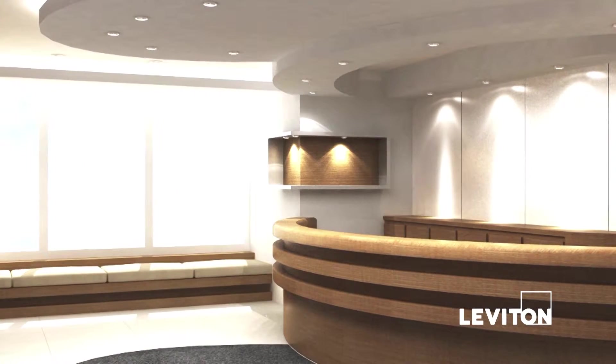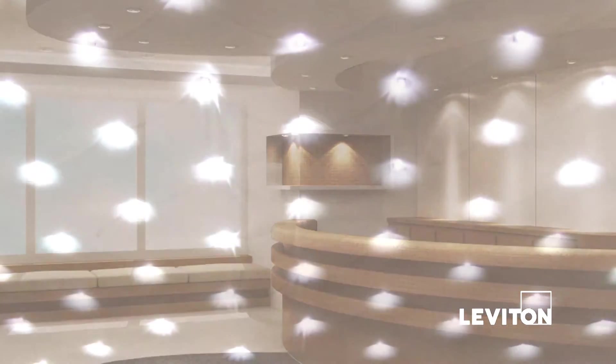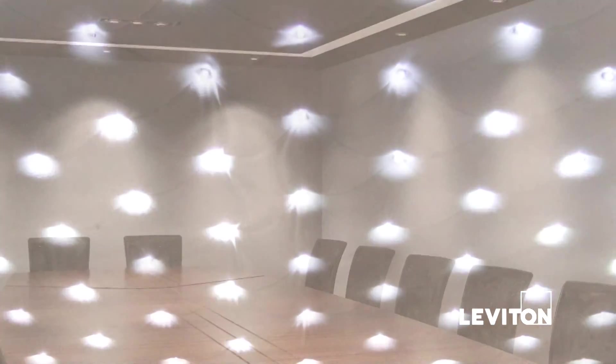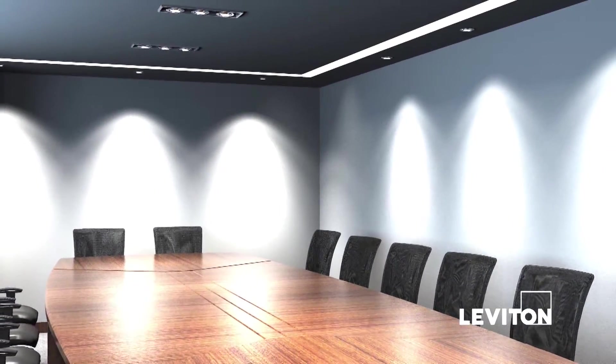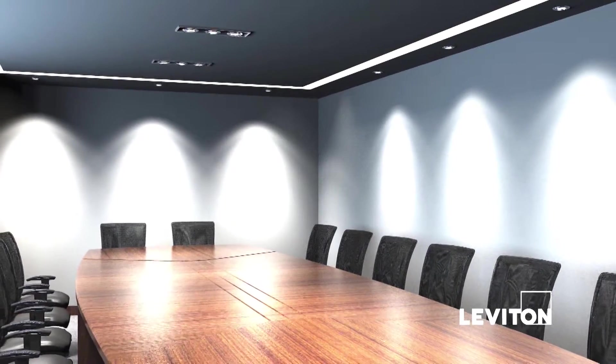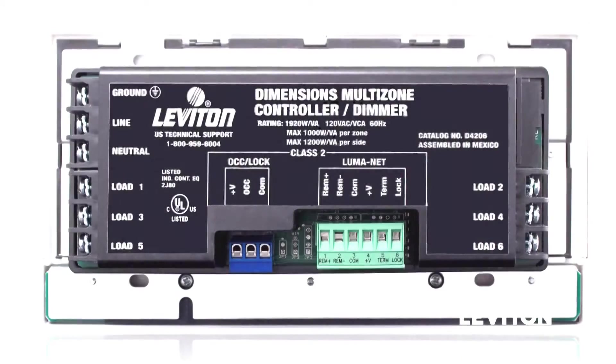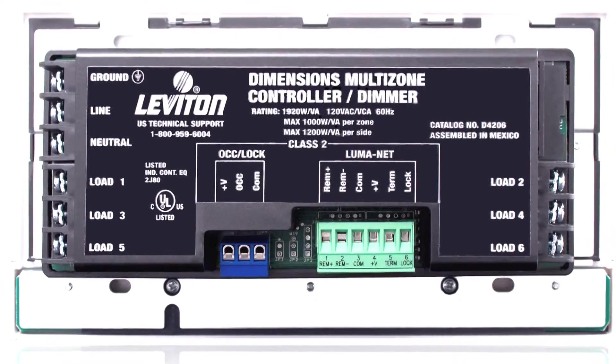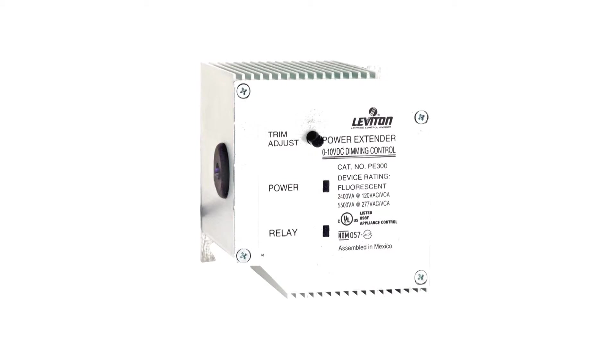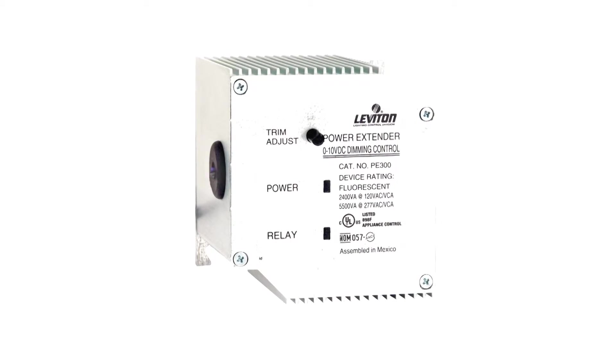One of the things we're seeing quite common in the field is the need to control load types that are 1 to 10 volt or 0 to 10 volt controlled loads. We're seeing this a lot in commercial applications like office spaces where they want to use LED lighting and we all know that you get some of the best dimming control when you're using 1 to 10 volt as a control signal as compared to trying to just do two-wire devices. Remember that the Dimensions 4000 are all two-wire outputs. So quite often what we will do is we'll use a power extender to convert the 0 to 120 to 1 to 10 volt.